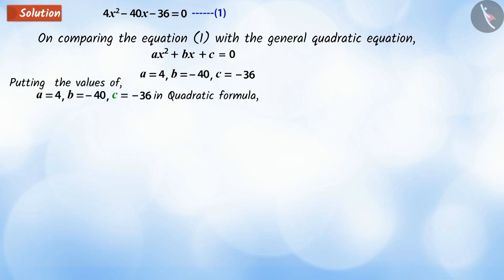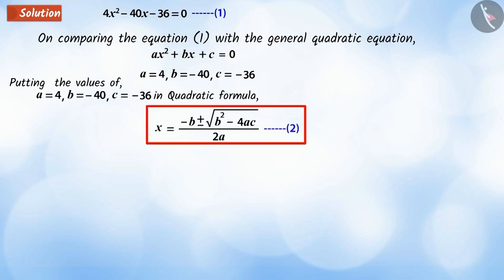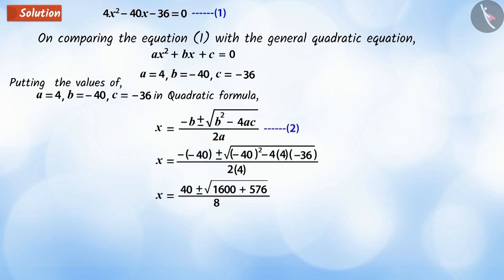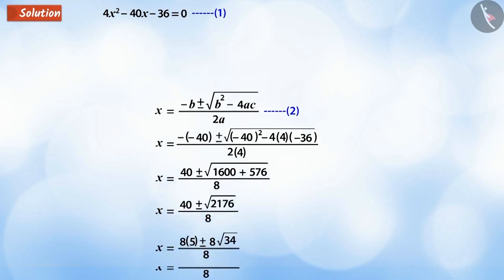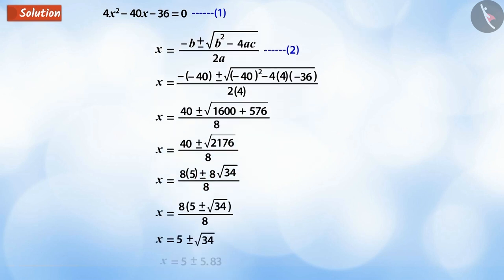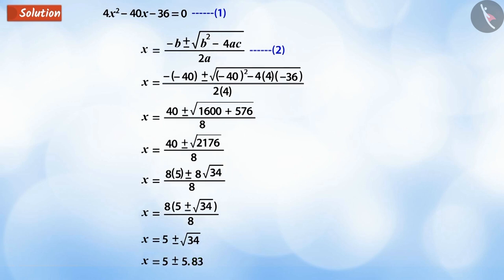Place the values of a, b and c in the quadratic formula that is in equation 2 and solve. On solving, we get x equals 5 plus and minus 5.83.